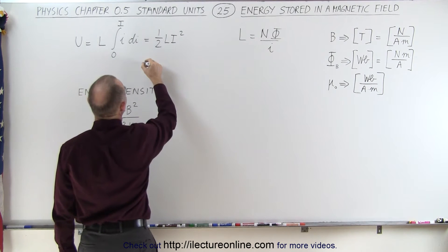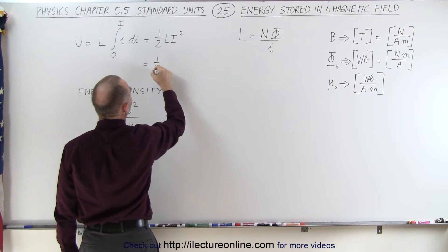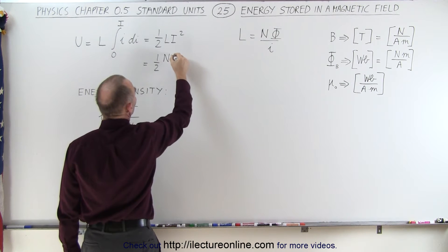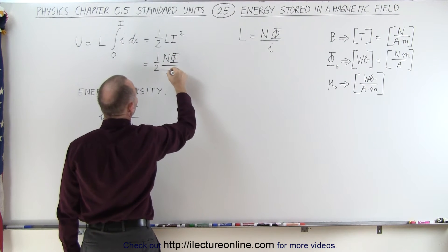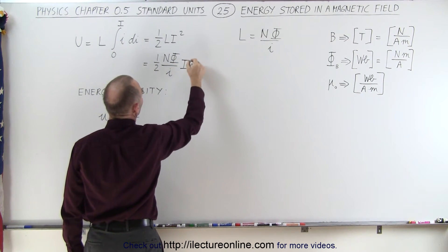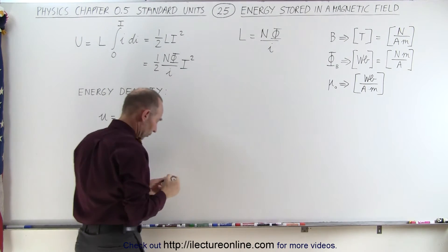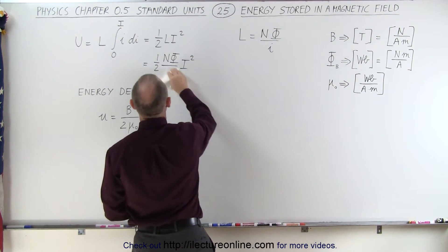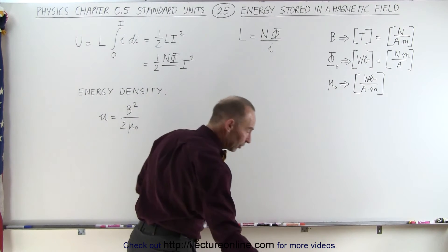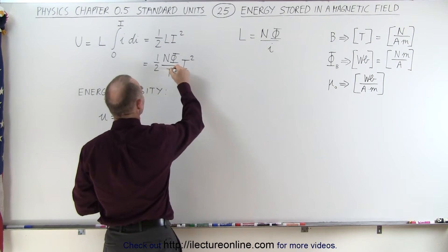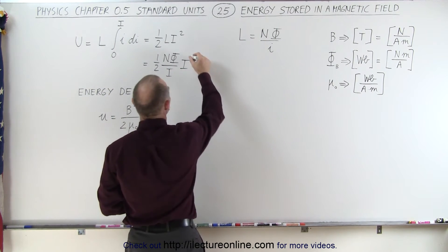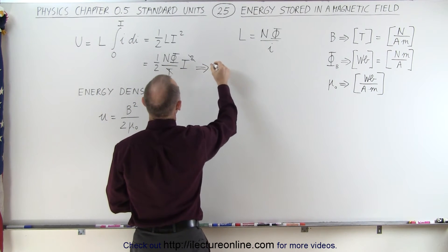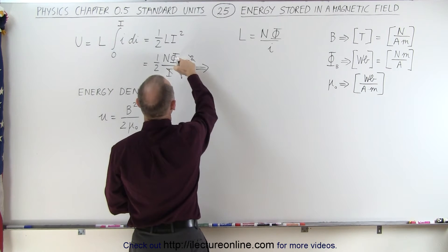Let's plug that in. The energy is equal to one-half times the number of turns times the magnetic flux divided by the current, times the final current squared. This I in the denominator will cancel with one power of I in the numerator, leaving just one factor of I. Number of turns has no units.